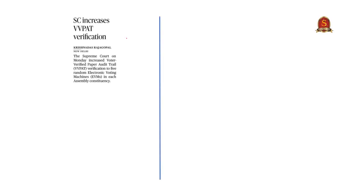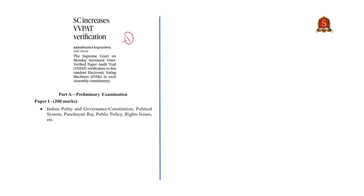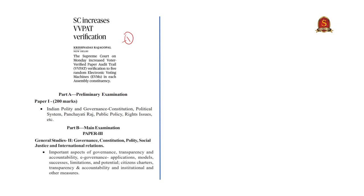The first article appears on page number 1 in both the editions. This article is important from both prelims and mains point of view. It is covered under Indian polity and governance of prelims syllabus and important aspects of governance, transparency and accountability of GS2 mains syllabus.